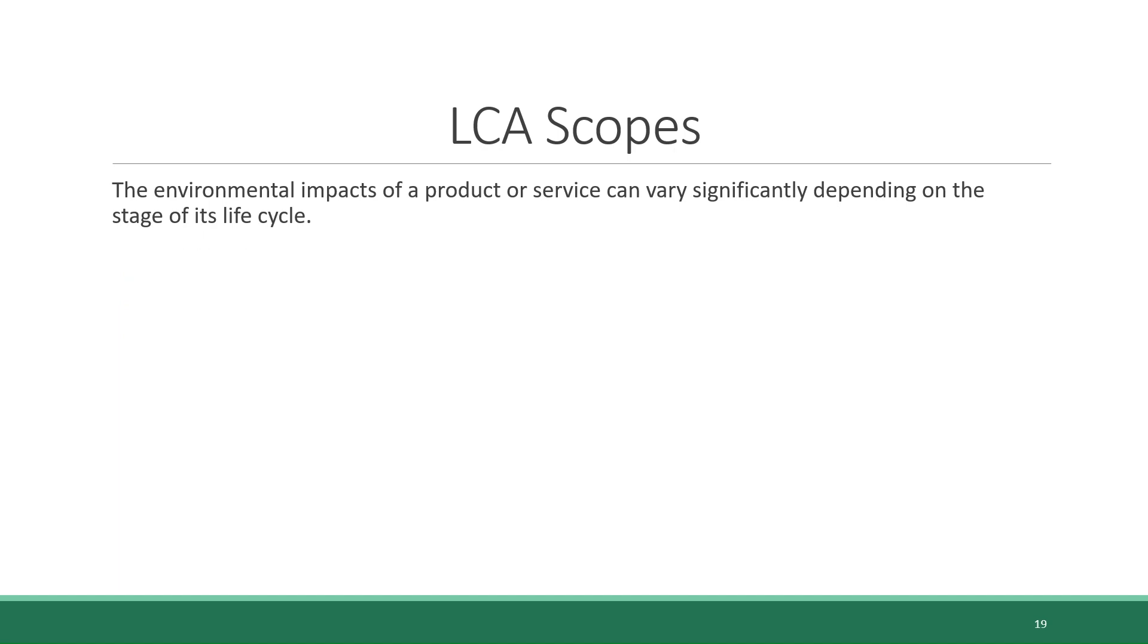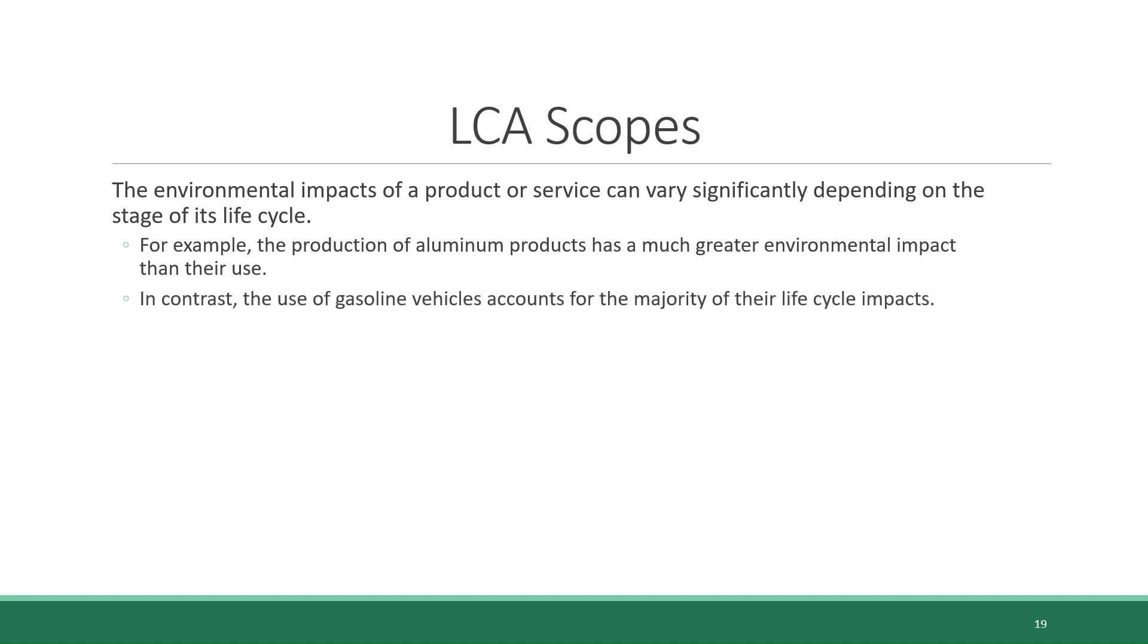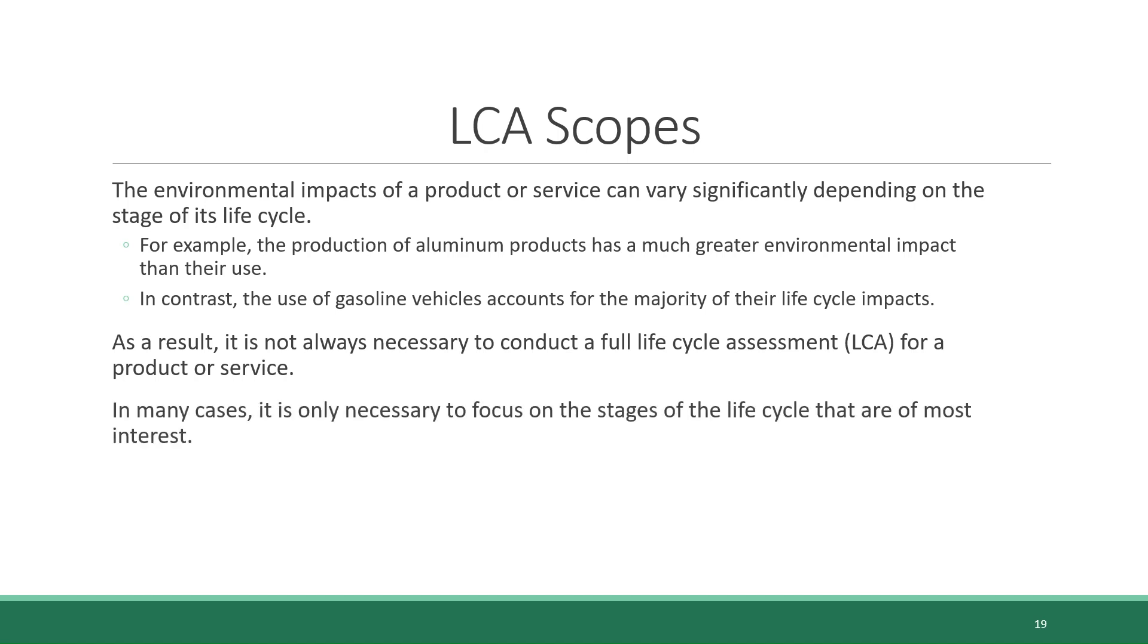The environmental impacts of a product or service can vary significantly based on the stage of its life cycle. For instance, the production of aluminum products exerts a much greater environmental impact than their actual use. In contrast, the majority of life cycle impacts for gasoline vehicles occur during their usage. Consequently, conducting a full life cycle assessment for a product or service is not always necessary. In many cases, it is sufficient to concentrate on the life cycle stages that are of particular interest.